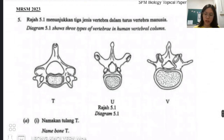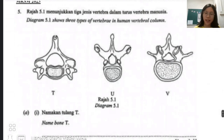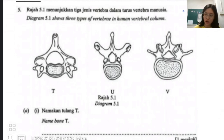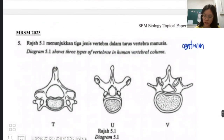Moving on to another question: there are three types of vertebrae in the human vertebral column. To identify them, first compare their centrum. The one with the largest centrum is most likely the lumbar vertebrae. Another feature to compare is the transverse foramen — a passage for veins to pass through.